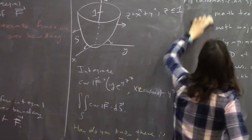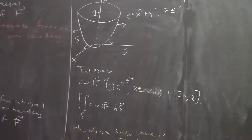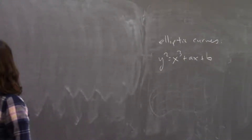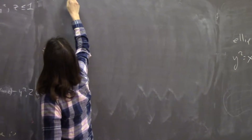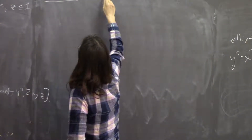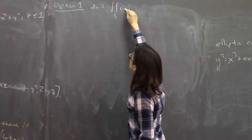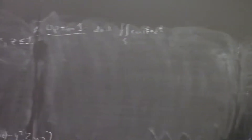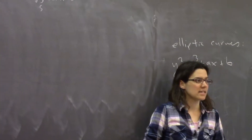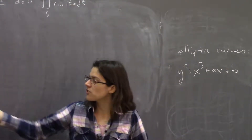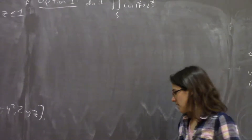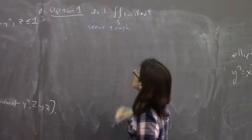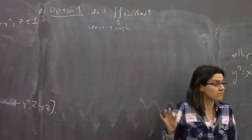So let's do this — we want to take this double integral. Option one is to just do it directly: take the double integral over S of curl F · dS. But it seems like a bit of a mess. We'd have to parameterize this surface and then integrate over it. So it seems tough — not that we can't do tough things, but maybe it shouldn't be our first option.